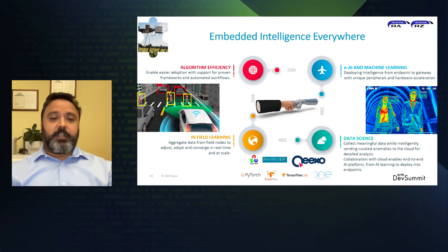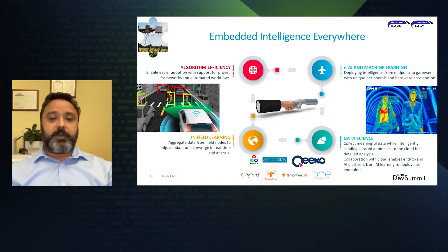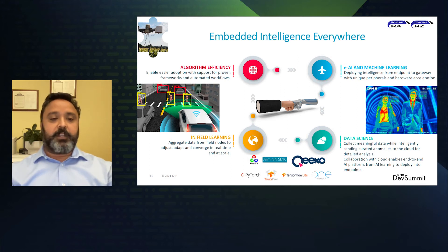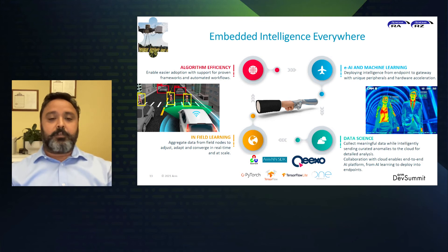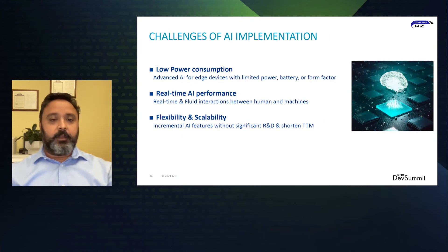The next prerequisite is embedded AI and machine learning. Endpoint AI devices must strike a balance between real-time AI performance and power efficiency, as they often have limited power, size, and battery. Intelligent and efficient AI inferencing minimizes data transfer to endpoint gateways using unique peripherals and hardware accelerators. The third prerequisite is data science — collecting only meaningful data and intelligently sending curated anomalies to the cloud for analysis. We believe this involves a closed loop between big data science on the cloud and efficient tuned models running on endpoint devices. The fourth is in-field learning: continuously train, tune, and deploy machine learning models through this loop.